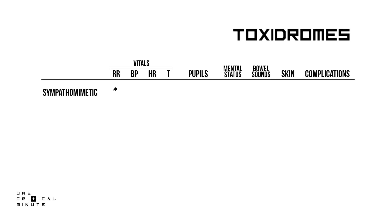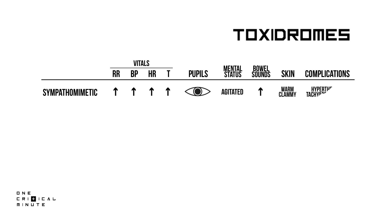Sympathomimetics like cocaine and amphetamines cause a rise in all vital signs. Pupils are dilated, skin is warm and clammy, and their bowel sounds are active. Their mental status is agitated. Watch out for hyperthermia and tachyarrhythmias.